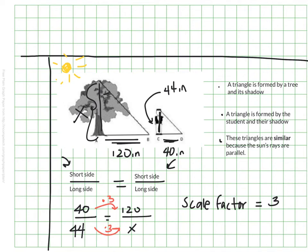Which means if I want to find the height of the tree, I just need to do 44 times 3 and that will tell me how tall my tree is. Which is of course 132 inches, which is I think 11 feet tall. So the tree is 11 feet tall.